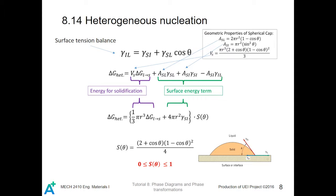For heterogeneous nucleation, as its name implies, there is a third phase which facilitates the growth of the nucleus, apart from the original liquid and solid phases. The figure shows how we derive the equation for this kind of nucleation. The interface or surface acts as the third phase in this system, and by using a surface tension balance and substituting the respective equations, we obtain the heterogeneous nucleation expression.